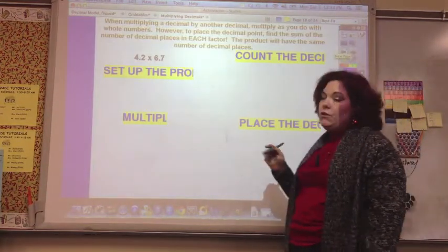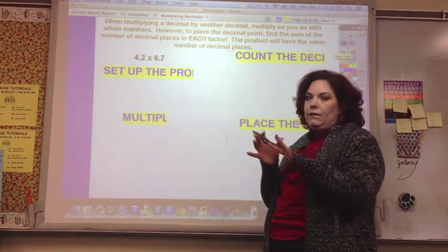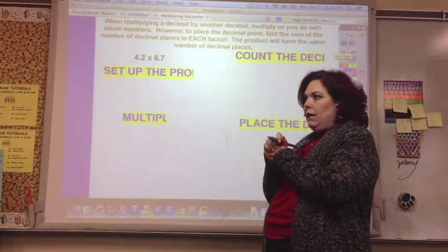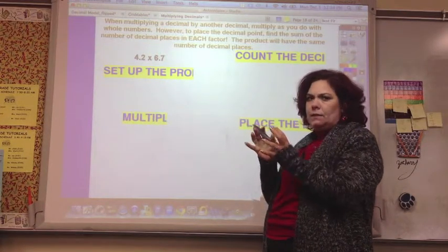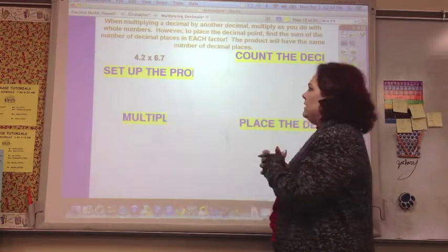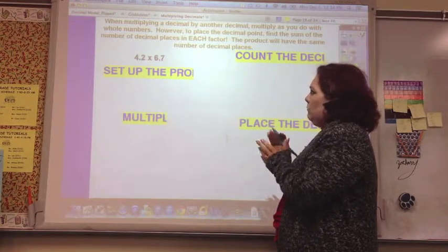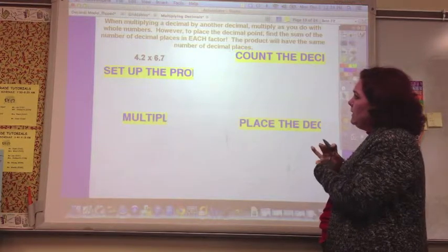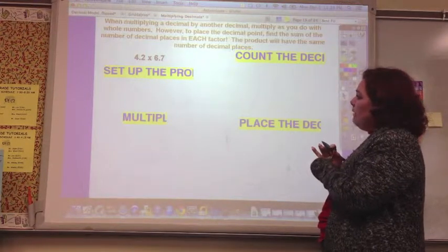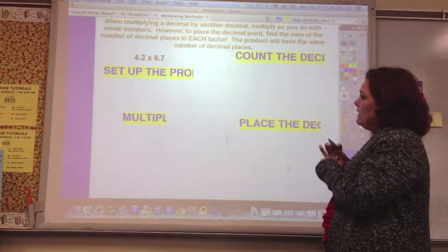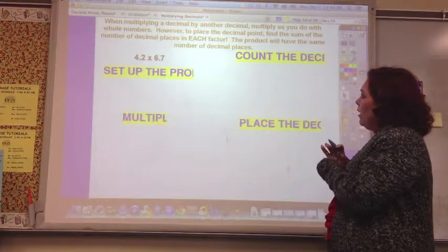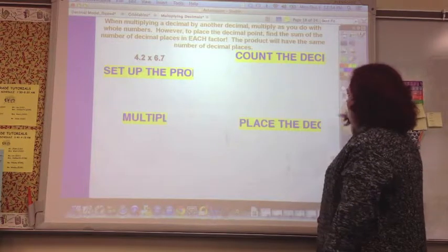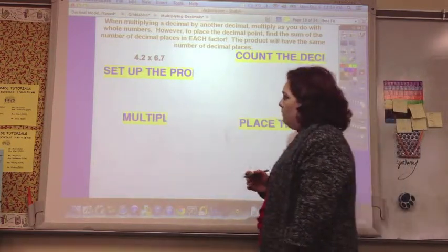So to do it without the models, because, I mean, it's unrealistic that you have models where you're multiplying decimals, and that you would have all these decimal grids to do this with. So it says, when multiplying a decimal by another decimal, multiply as you do with whole numbers. However, to place a decimal point, find the sum of the number of decimal points in each factor. The product will have the same number of decimal points. So let me show you. That's a lot of words. Let me show you what that is.